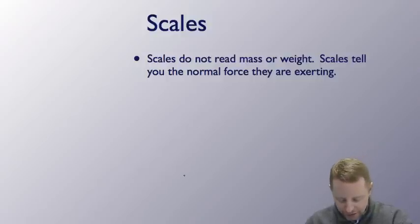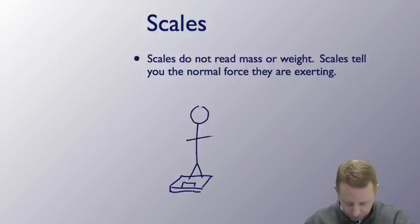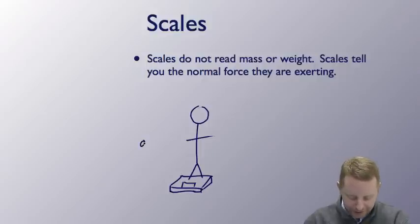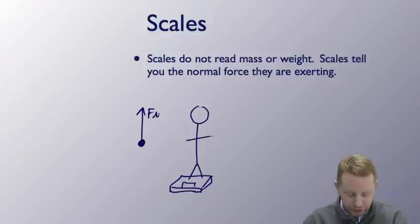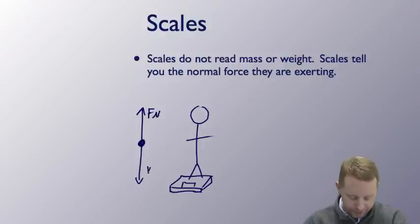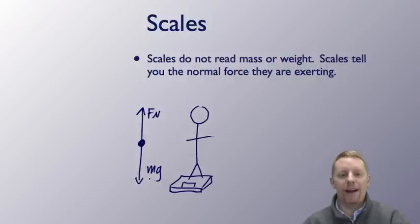If we were to draw a diagram of this, let's put our scale down here on the ground, and we've got somebody standing on top of it. If we draw a free body diagram for the person, we have the normal force pointing up — the force of the scale — and the weight of the person mg, assuming we're on the surface of the earth where the gravitational field is relatively constant. That's our free body diagram for somebody standing on a scale in an elevator. Physicists really love these types of problems because it's a great way to practice Newton's second law.